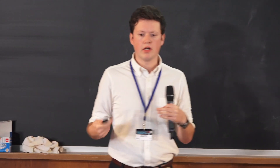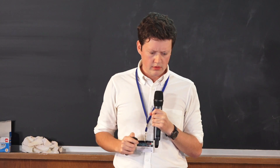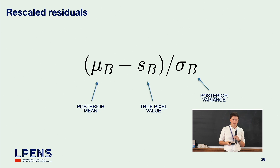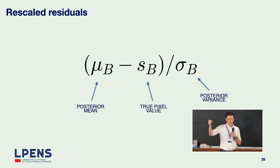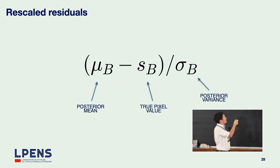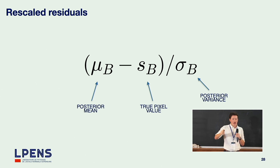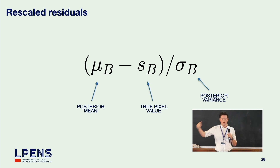Maybe we want to quantify how well it's doing. We rescale our residuals: we take our posterior mean, our true pixel values, and rescale them by the posterior variance. If our estimates really are the posterior mean and posterior standard deviation, then these values should be distributed with mean zero and standard deviation one. If that's true, it means both our forward model — the synthesis with a single training image — is working, and our moment networks are really giving the posterior distribution, because this is tested on independent, non-synthesized simulations.